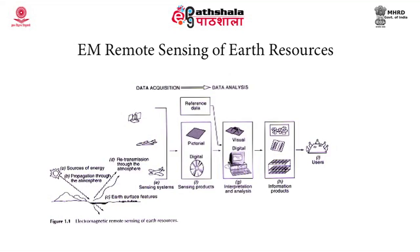This is followed by data analysis, where the data obtained by the sensors is analyzed and interpreted either visually or digitally depending on the type of data. Visual interpretation is done for pictorial data, while digital image processing is carried out for digital data. After due analysis, the information products are released and can be passed on to users or integrated with geographical information systems. We will be studying about these details in the coming slides.